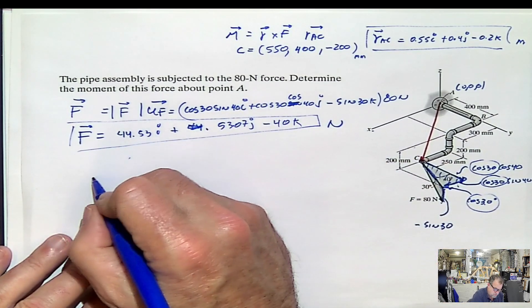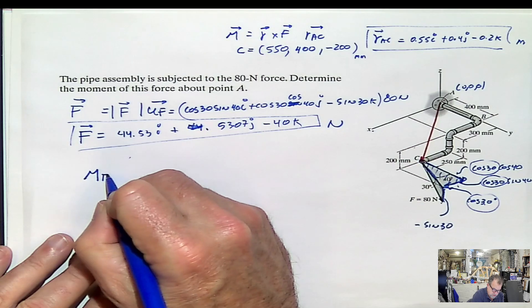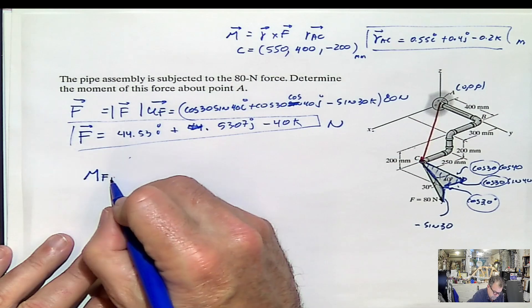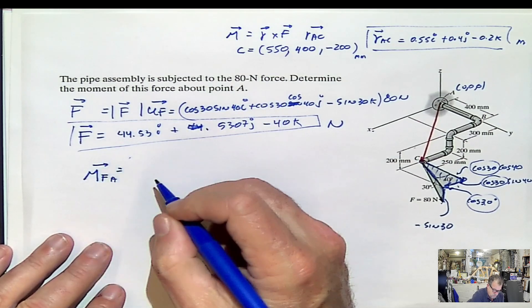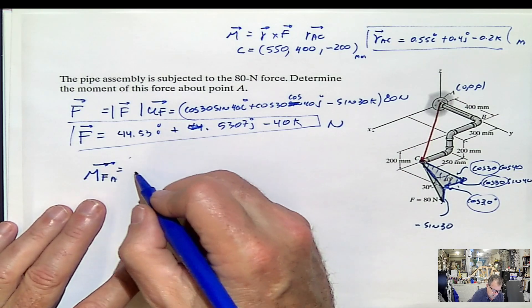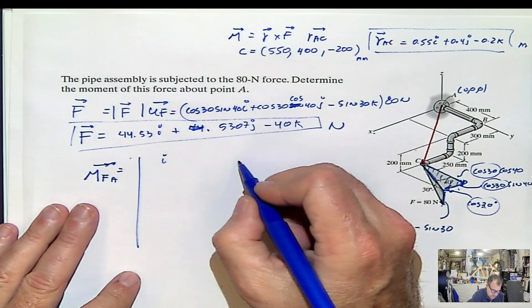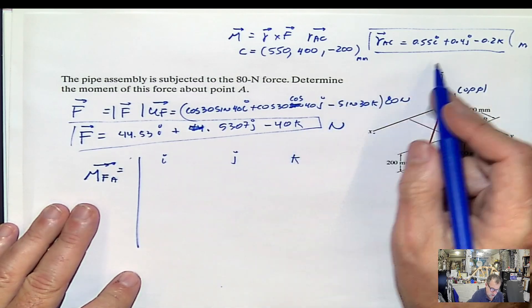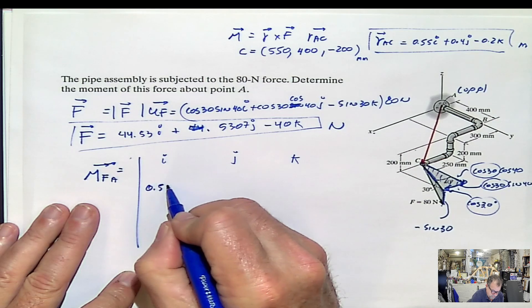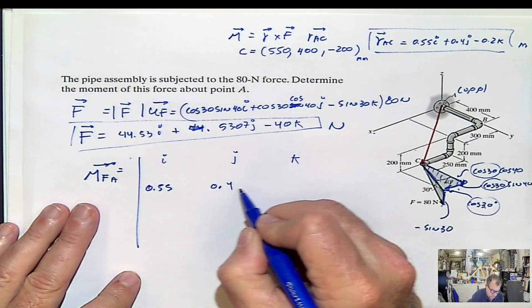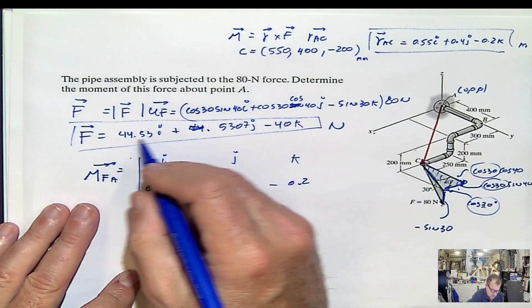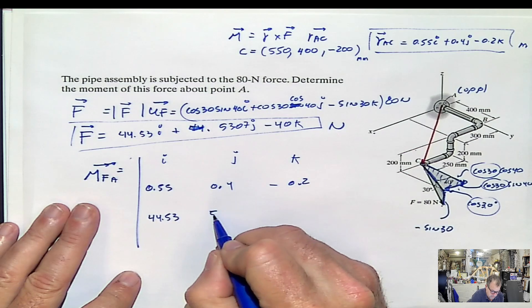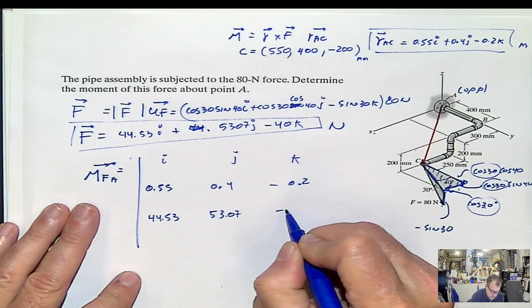What do you do now? Now, moment of the force with respect to the point A will be i j k. And then our R, 0.55, 0.4, negative 0.2. And our force, 44.53, 53.07, negative 40. And we do the cross product.